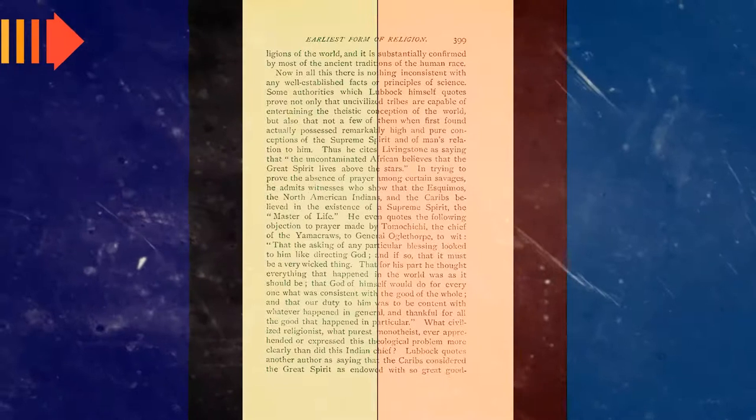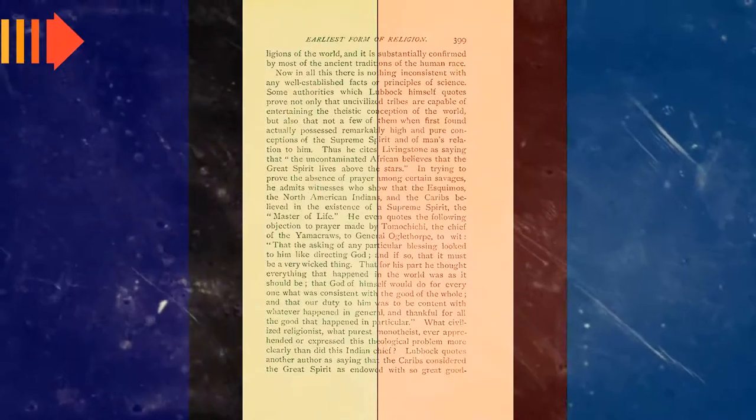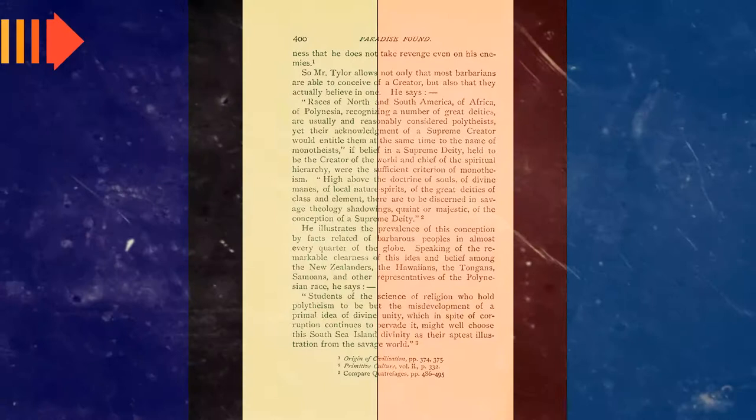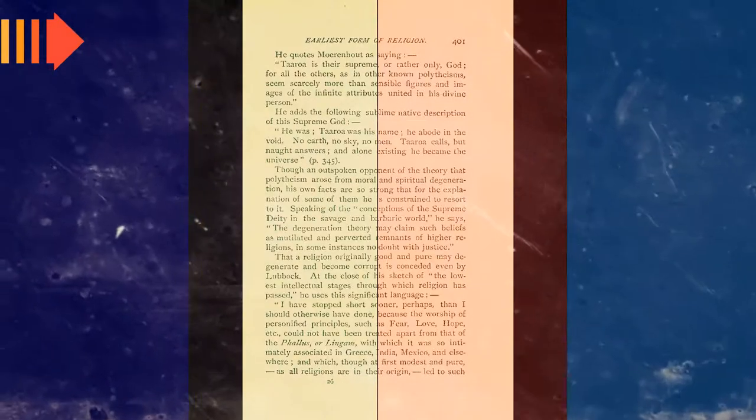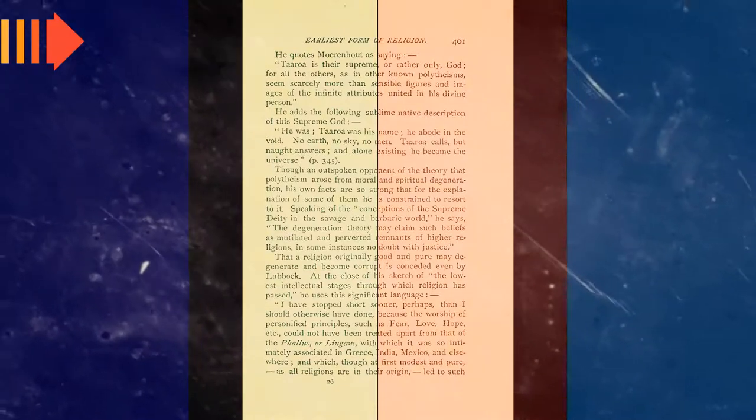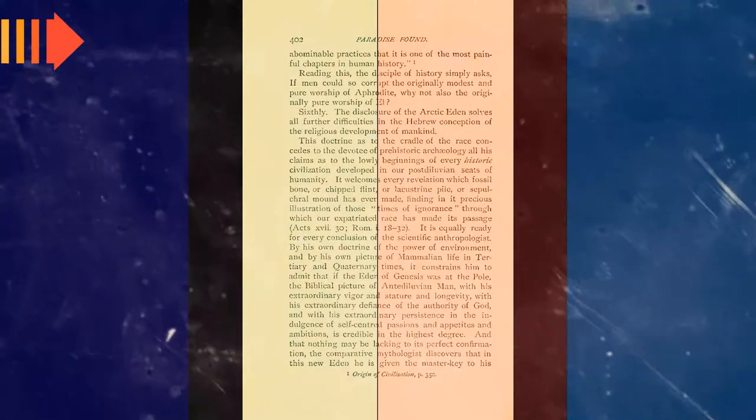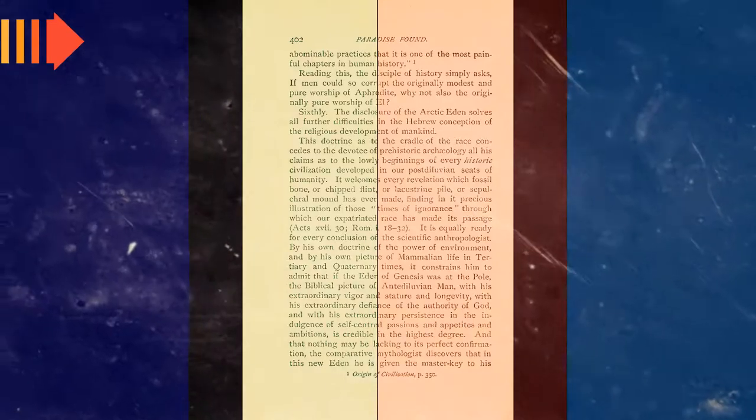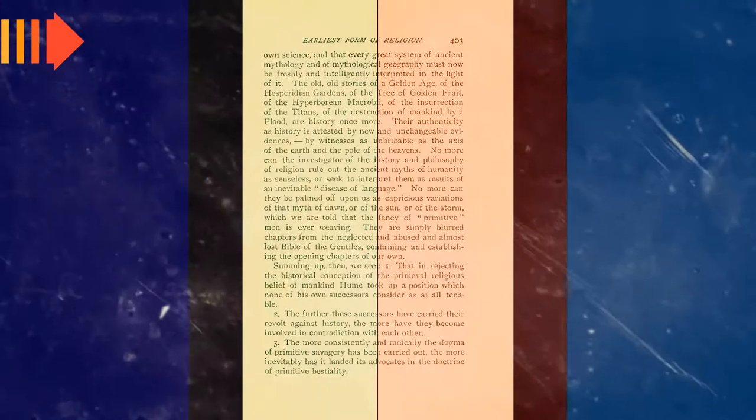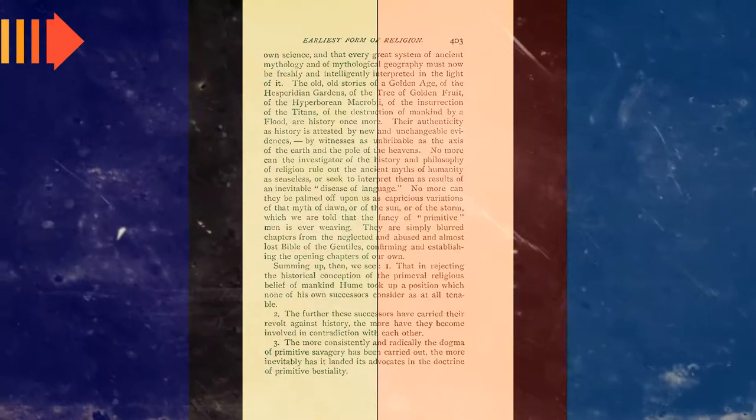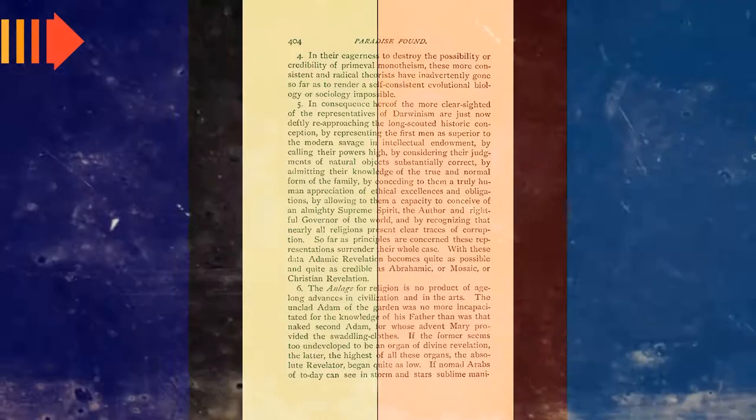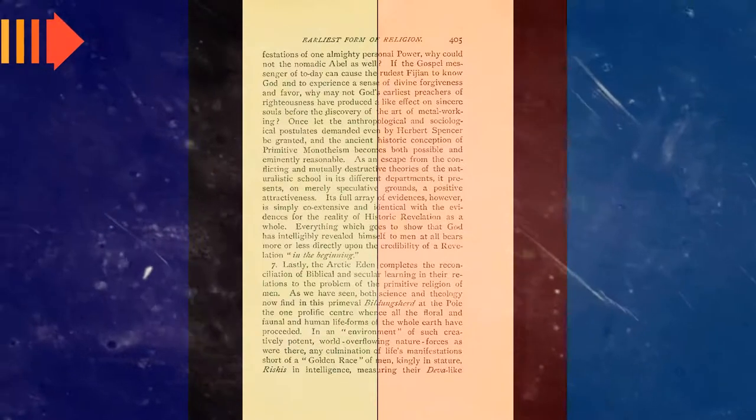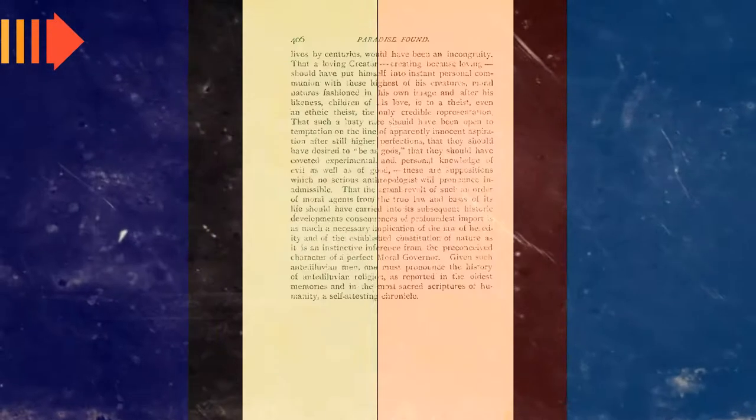He also asserted that Atlantis would rise again in the 1960s, sparking much popularity of the myth in that decade, and that there is a Hall of Records beneath the Egyptian sphinx which holds the historical texts of Atlantis. As continental drift became widely accepted during the 1960s, and the increased understanding of plate tectonics demonstrated the impossibility of a lost continent in the geologically recent past, most lost continent theories of Atlantis began to wane in popularity.